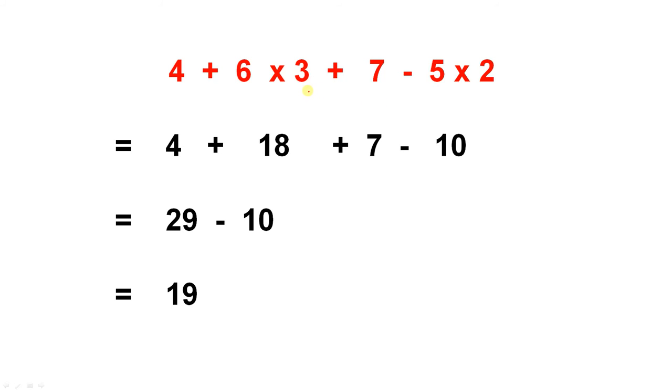Slightly more involved example. We have to do the multiplication first, here and here. 6 times 3 is 18, 5 times 2 is 10. All the signs have been carried down. 4 plus 18 gives you 22, 22 plus 7 gives you 29, minus 10. And 29 minus 10 is 19.